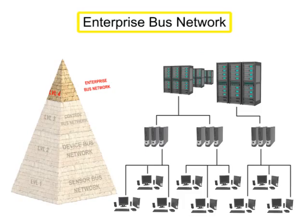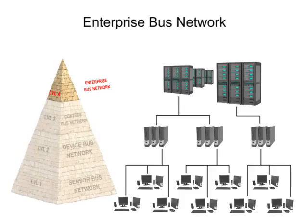The enterprise or information level network in a company connects all computers and departments together. It is the most overarching and complex of all the various network levels. This level of networking is primarily computer-driven, which allows for data collection, data monitoring, file transfers, and email exchange on a large scale.